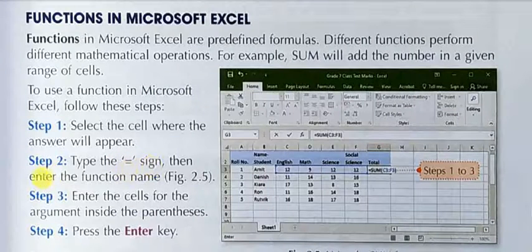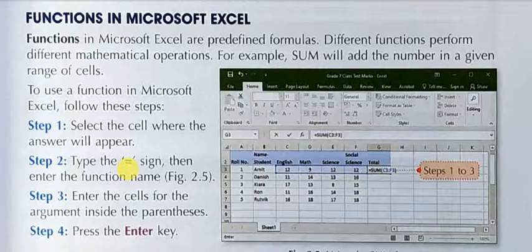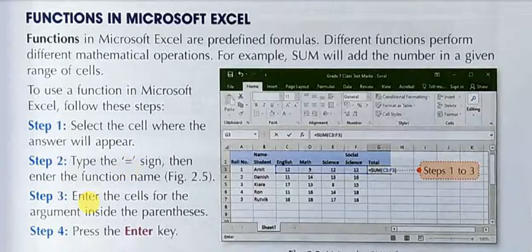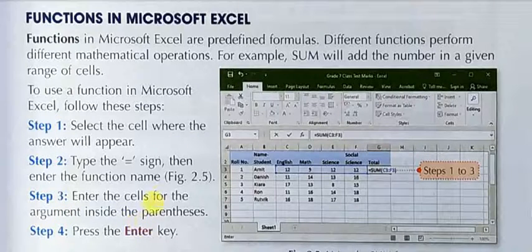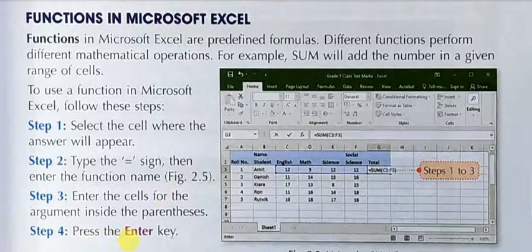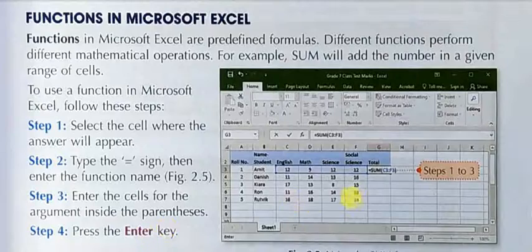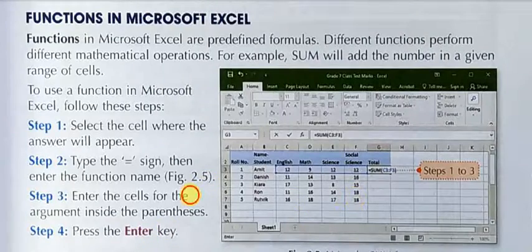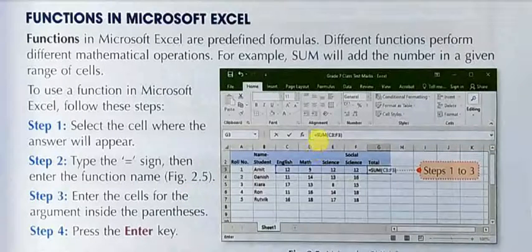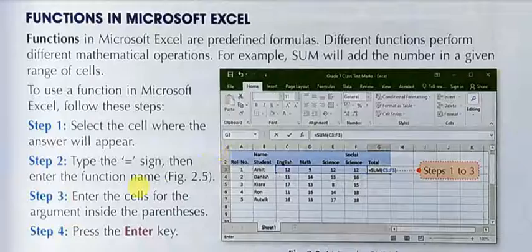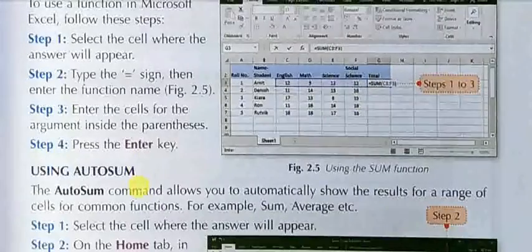Step 2: Type the equal sign, then enter the function name. Step 3: Enter the cells for the argument inside the parenthesis. Inside the brackets, you write the cell address. Step 4: Press the Enter key. When you press Enter, the output will be shown there. You can also see the formula in the formula bar.